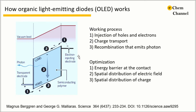Here is the simplest OLED: an organic semiconductor sandwiched between two metal electrodes. It emits light in three steps. Step one: injection of holes and electrons into the delocalized highest occupied and lowest unoccupied molecular orbitals — the HOMO and LUMO — of the organic layers. Step two: charge transport. Step three: recombination and light emission.